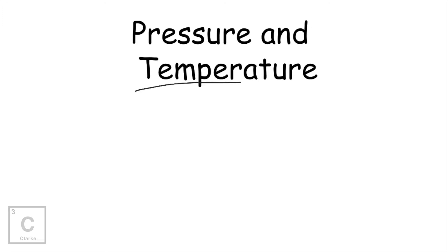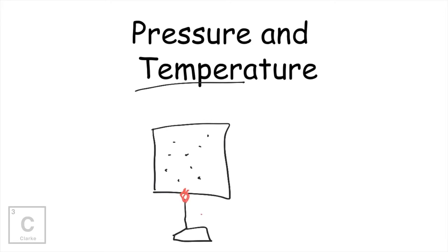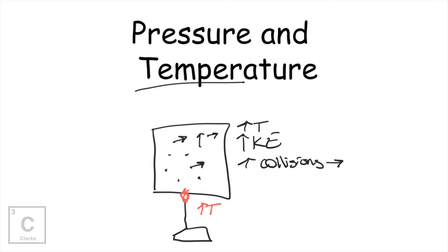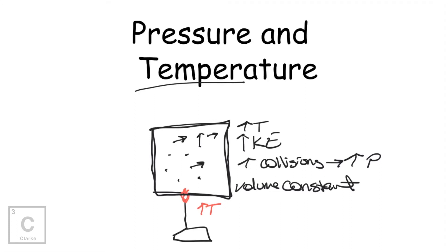Gay-Lussac's law also involves temperature. We have our container of gas with our gas particles. If we increase the heat on our Bunsen burner and increase the temperature, our gas particles are going to start moving faster. They're going to be making more and more collisions. As the temperature increases, the kinetic energy of our gases also increases because we're having increased collisions. If we're having increased collisions, that means we're having increased pressure. If the volume stays constant — this container can't get any bigger — and we're heating up all these particles so they're moving faster and having more collisions, then the only option is for the pressure to increase.